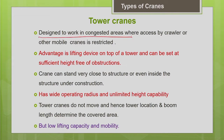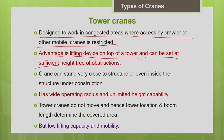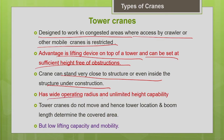Tower cranes are mainly designed to work in congested areas where access by other mobile cranes is restricted. The lifting device is on top of a tower set at sufficient height free of all obstructions, giving unlimited height capability and a wide operating radius. However, mobility is limited — most tower cranes are static, so the tower location must be chosen very carefully as it determines the working range.